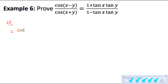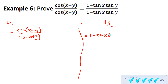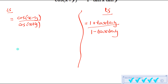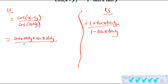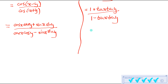Last one — example 6. There's a lot we're going to have to do to prove this one. On the left, let me start by using my compound angle identities for cosine. Cos of x minus y equals cos of the first angle times cos of the second angle plus sine of the first angle times sine of the second angle. And this is all over cos of x plus y, which using the compound angle identity goes to cos of the first angle times cos of the second angle minus sine of the first angle times sine of the second angle.